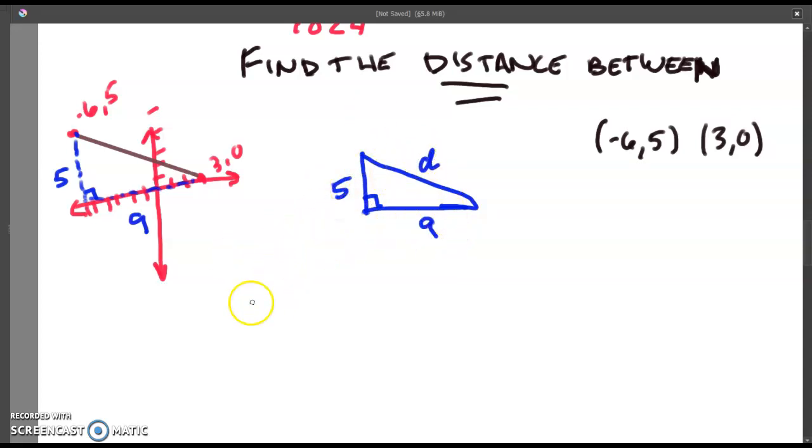All right. In order to find the value of d, all we have to do is use the Pythagorean theorem. We'll do a squared plus b squared equals c squared. 5 squared plus, since d is the hypotenuse in this case, 9 squared equals c squared. 5 squared is 25. 9 squared is 81 plus 25 equals c squared. 81 plus 25 is going to be 106 equals c squared.